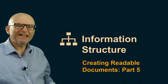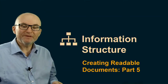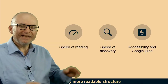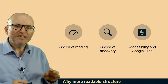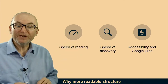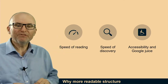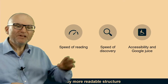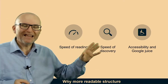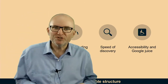In this video, we're going to have a look at the fourth principle of readable documents, which is information structure. You need to focus on giving people the right structure to follow when they're reading your document, because that makes a great difference for the speed of reading, speed of discovery in the document, but also gives accessibility and what's sometimes been called the Google juice.